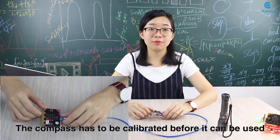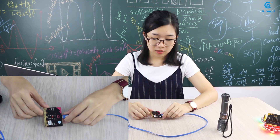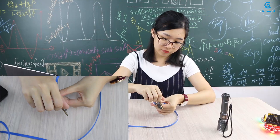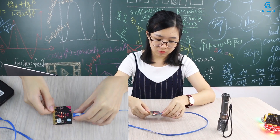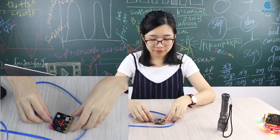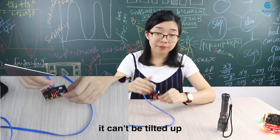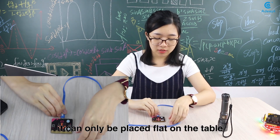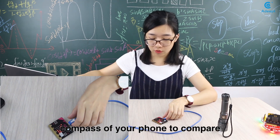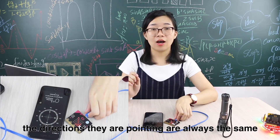The compass has to be calibrated before it can be used. We can draw a circle or tilt to fill the screen. Now we rotate the micro:bit on the table. The arrow on the LED will always point to the north. It can only be placed flat on the table. Of course, you can use the compass on your phone to compare — the directions they point are always the same.